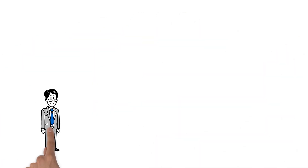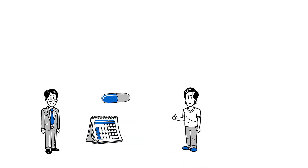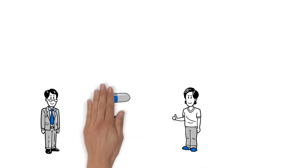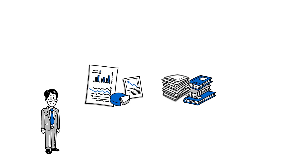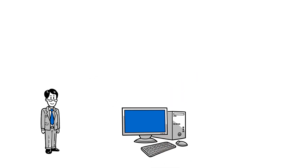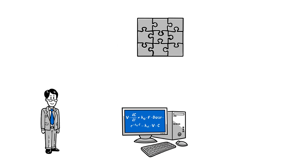Joe decides to try this approach with his new drug. He wants to know how long the clinical trial should last to conclude that the drug efficacy is superior to the standard of care. Similar to the airplanes, existing data and knowledge are integrated into a computer model. Models use mathematical equations to describe and link the different pieces of information.